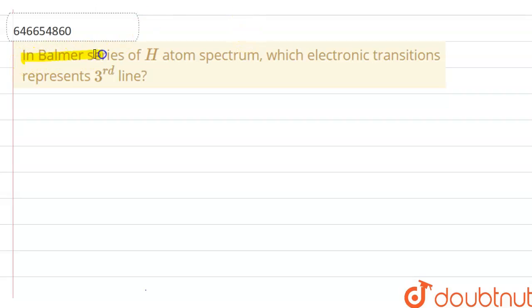Hello everyone, let's start the question. In Balmer series of hydrogen atom spectrum, which electronic transition represents the third line?